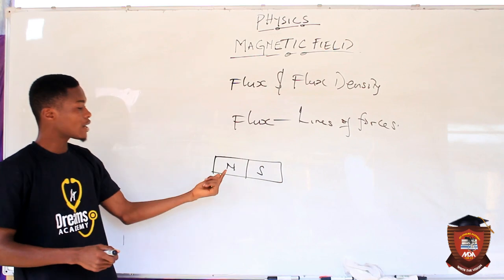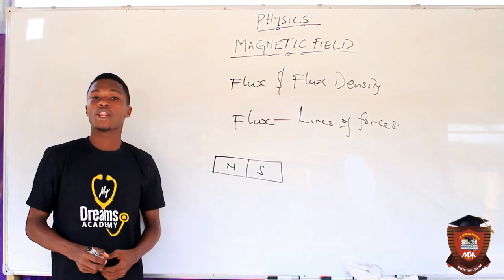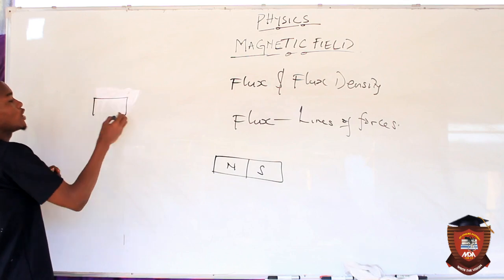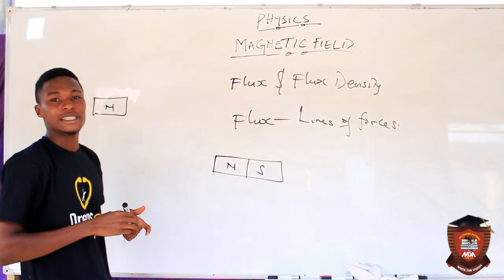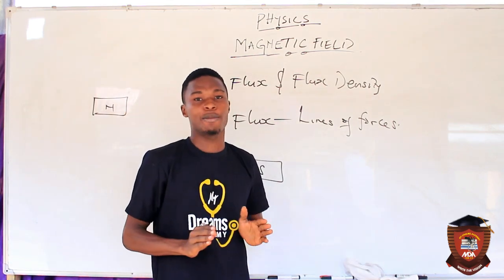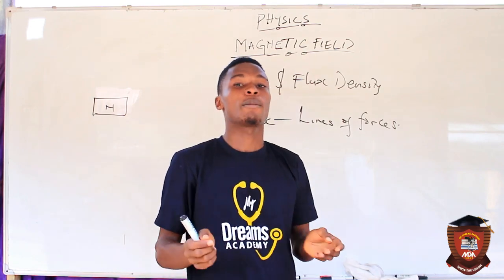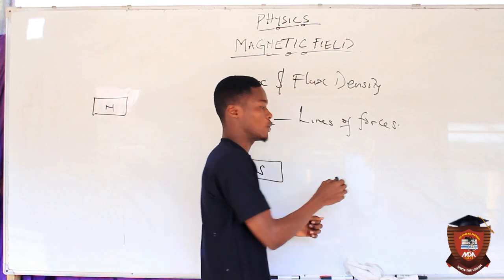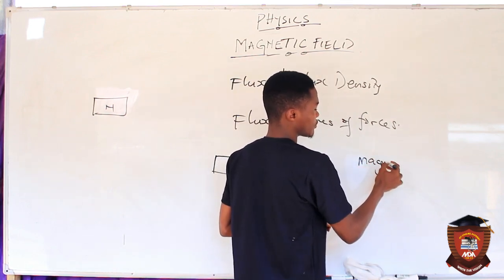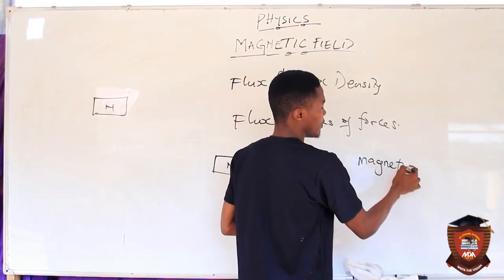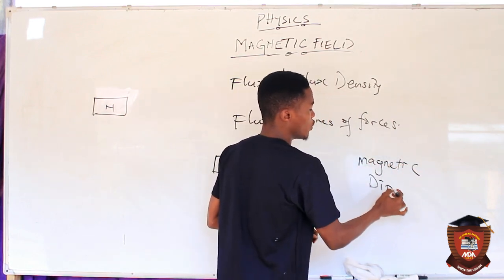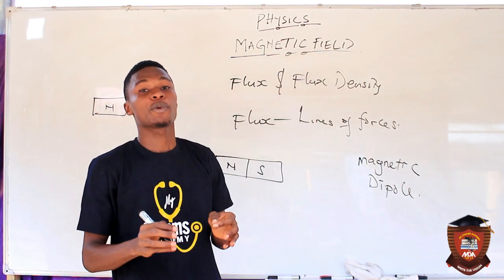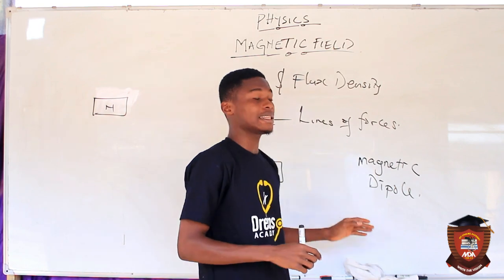To understand lines of forces, let's talk about separating a north and a south pole. In practice, it is not possible to separate a north pole from a south pole — and that property is called magnetic dipole. For example, if you split a bar magnet in two, you still get a north pole and a south pole on either side of each piece.